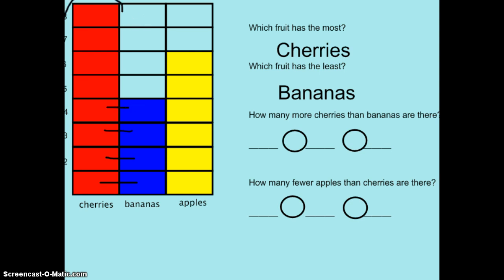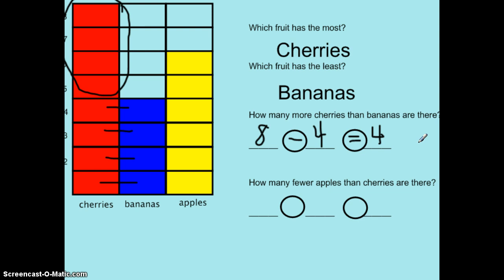This part here is the difference between the two groups. I'm going to write a subtraction sentence to show how many more people picked cherries than bananas. I'll start with the group that had the most — that was cherries. I know that eight students picked cherries. I'm going to subtract the group that is equal; they each had four votes. I'm going to subtract four. Eight minus four equals four.